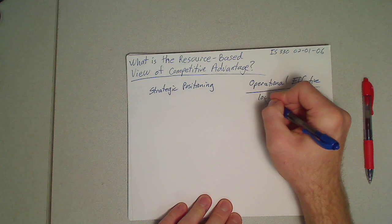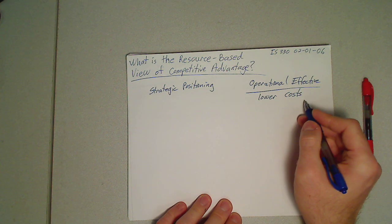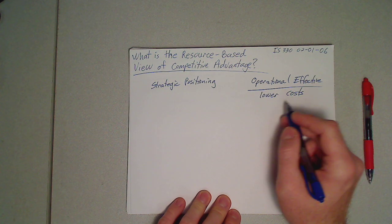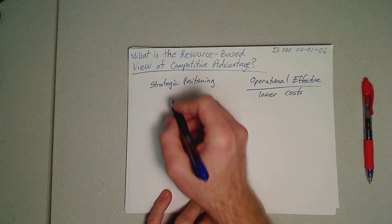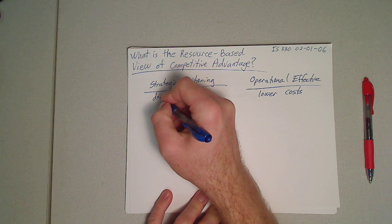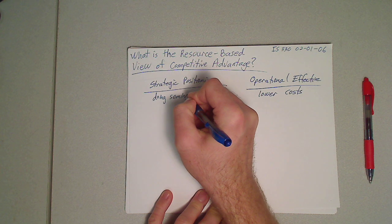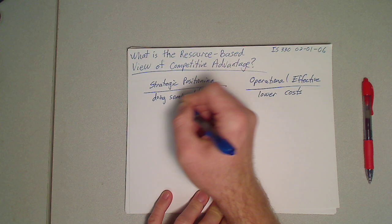we're trying to lower costs in a way of doing something faster, higher quality, lower defects so that our margins are better. And with strategic positioning we're doing something different and focused.